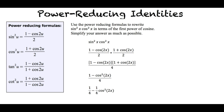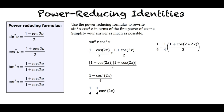Cosine squared u equals 1 plus cosine 2u over 2 with u equals 2x. Good job. From there we get 1 fourth minus 1 fourth times the quantity of 1 plus cosine 2 times 2x all over 2. Then we simplify the equation.